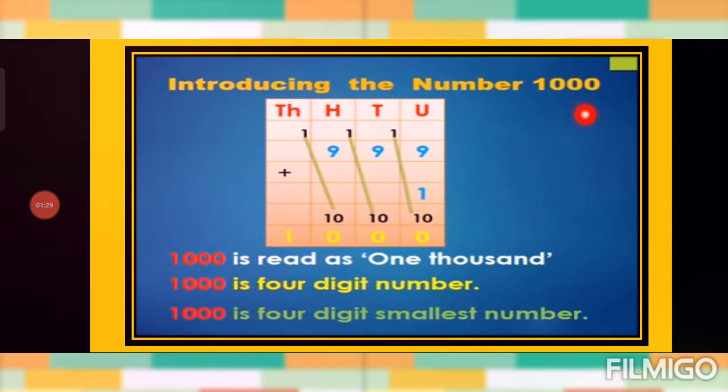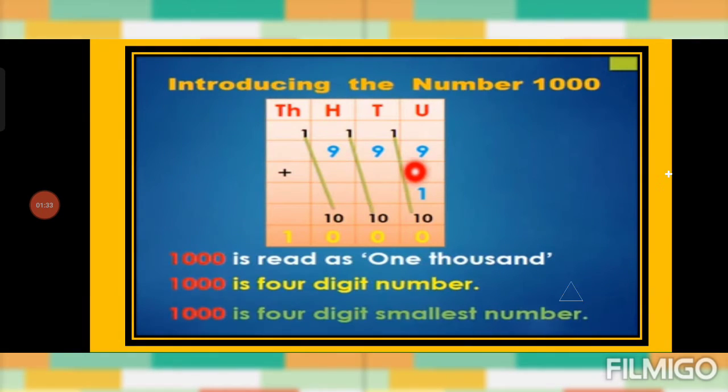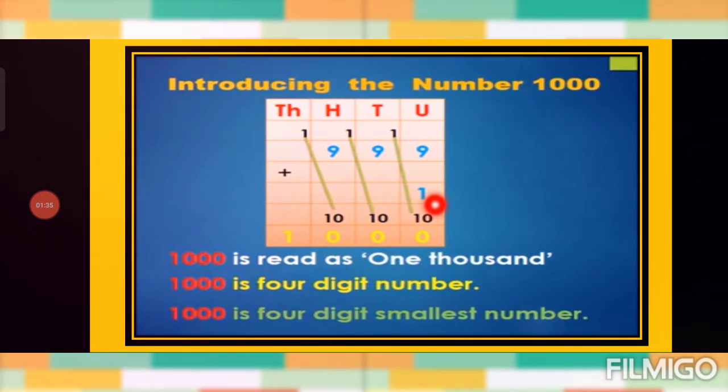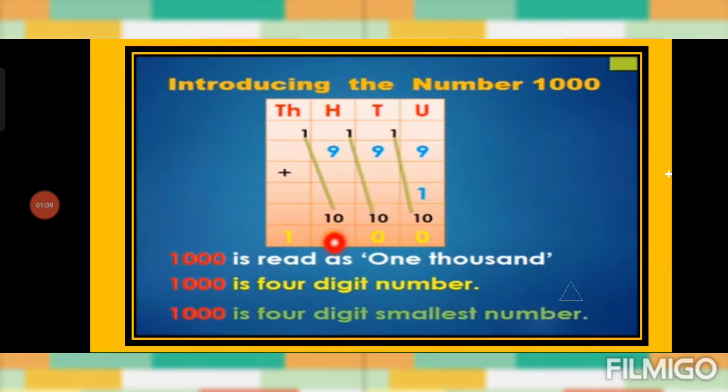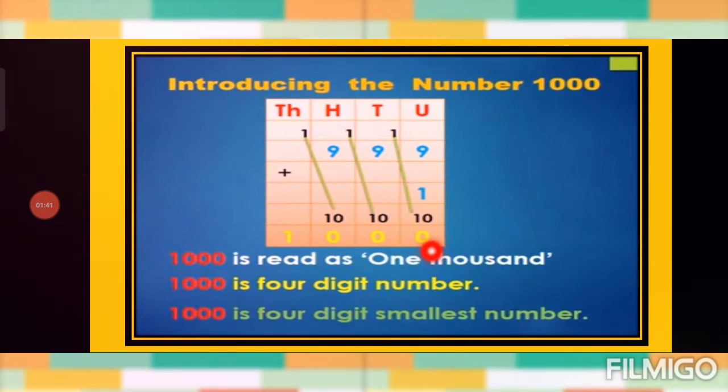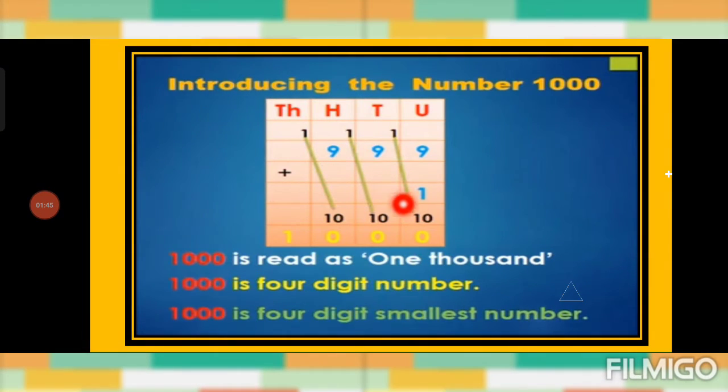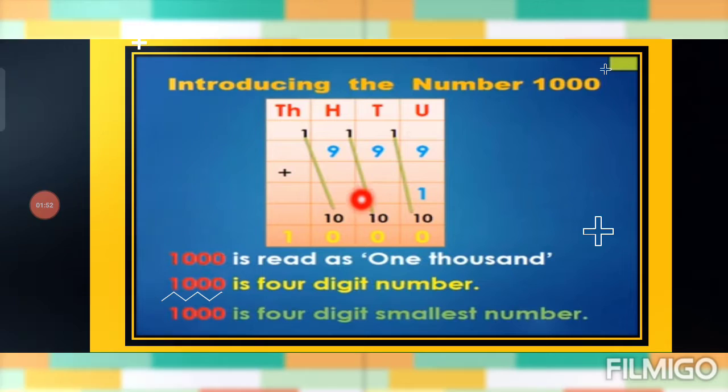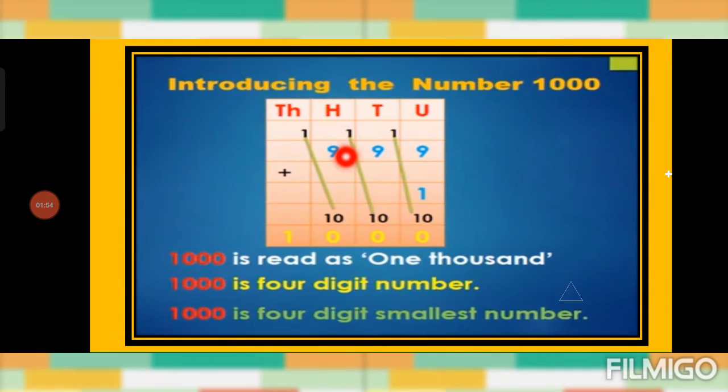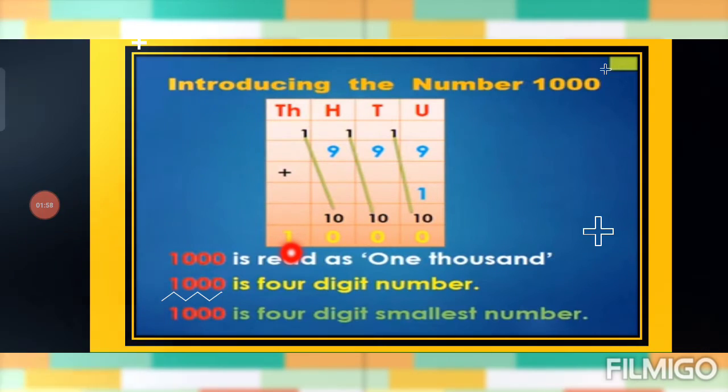Introducing the number 1000. Now children, 999 plus 1. When we add 1 to 999, the total is 1000. Nine plus 1 is 10, carry over 1. Nine plus 1 carry over is 10, carry over 1. Nine plus 1 is 10, carry over 1. The carry over 1 comes down.